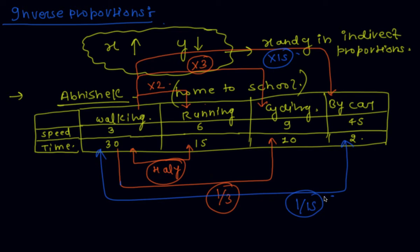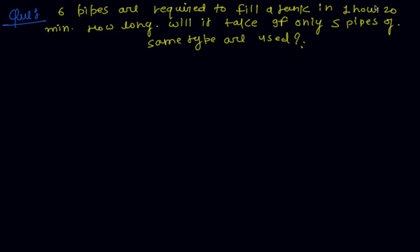By this method you can identify inverse proportion in any example. Now I will learn how to solve this type of inverse proportion problem. I take an example: 6 pipes are required to fill a tank in 1 hour 20 minutes. How long will it take if only 5 pipes of the same type are used? First, I check this problem for inverse proportion.